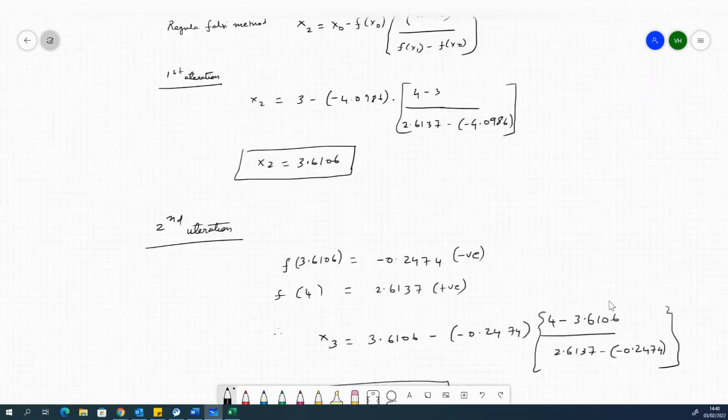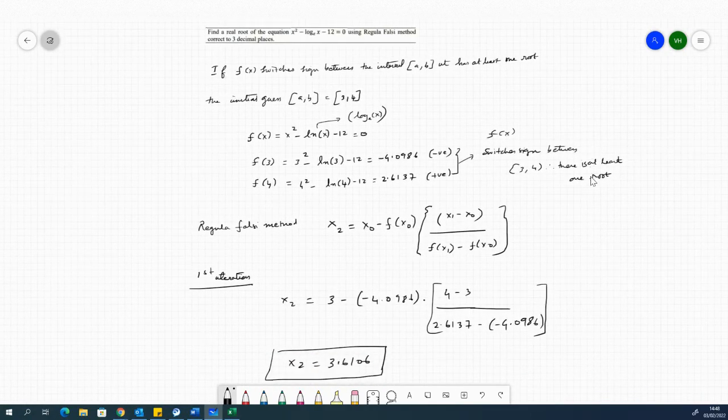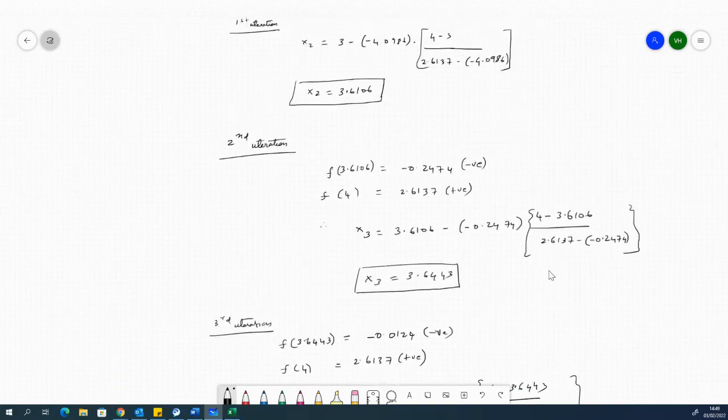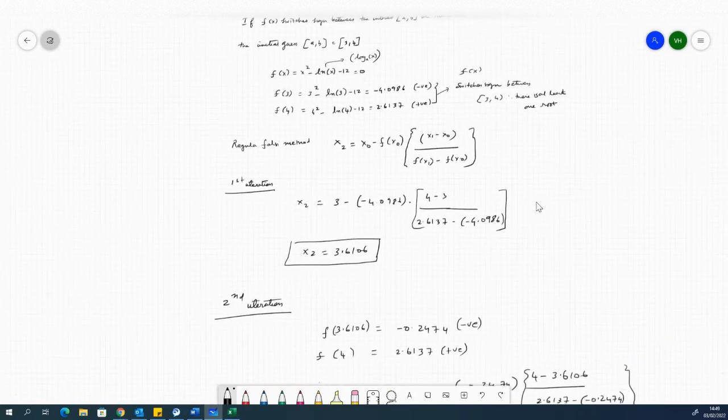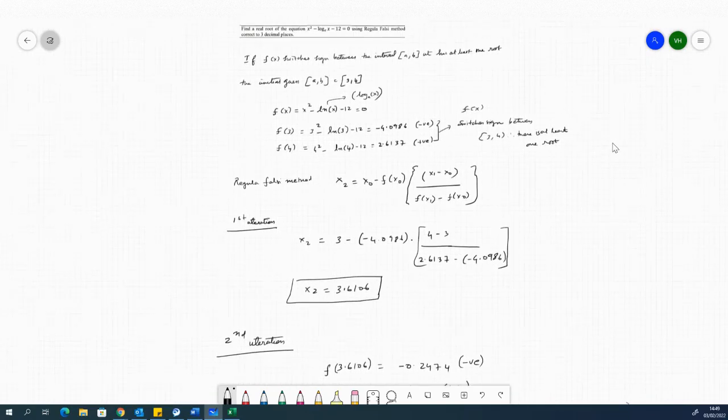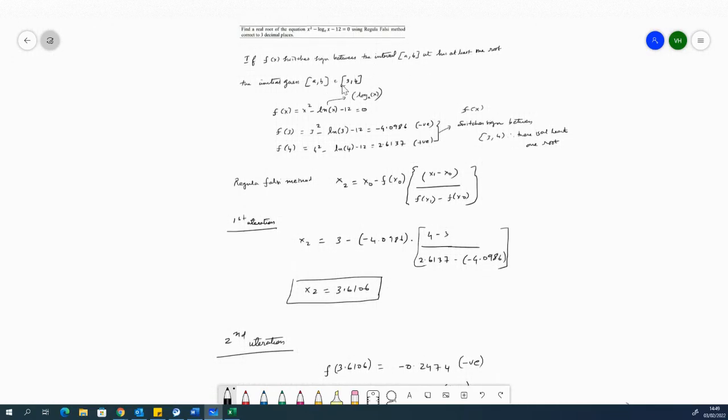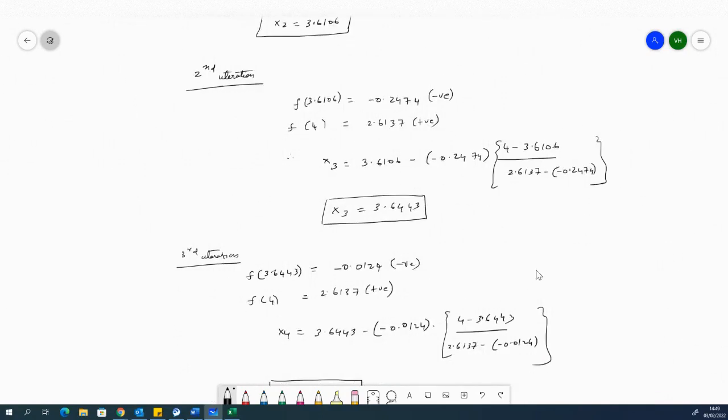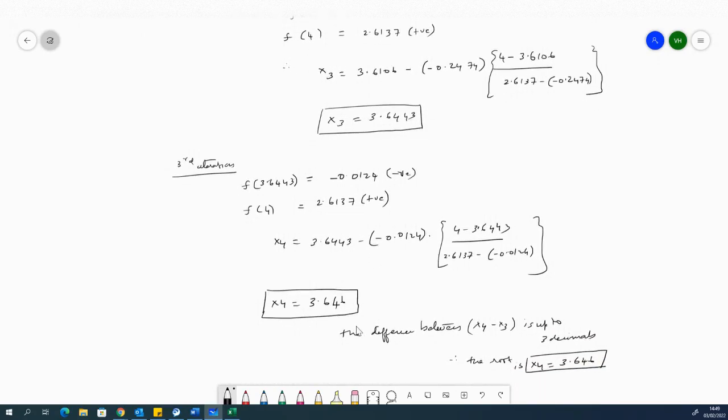So that is basically the conclusion of this problem. And this is the working summary of the problem. So that's the regular falsi method initialization in terms of how the functions which assign the equation for the regular falsi, first iteration, second iteration, third iteration, and the root within the decimal place up to 3 decimal places, considering that the difference is negligible between x3 and x4. Thank you.